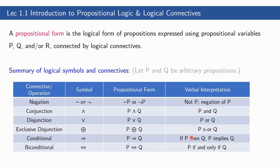This is the summary of the logical symbols and connectives. We have negation, conjunction, disjunction, exclusive disjunction, conditional, and biconditional. These are the propositional forms we can construct. A propositional form is the logical form of propositions expressed using propositional variables P, Q, and R connected by logical connectives or symbols. We will discuss each one by one.